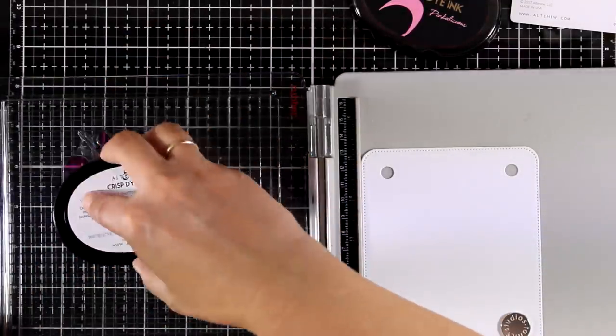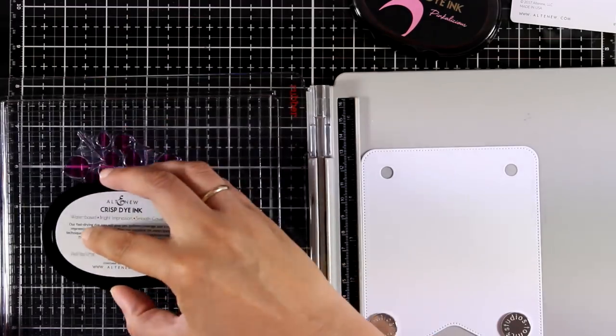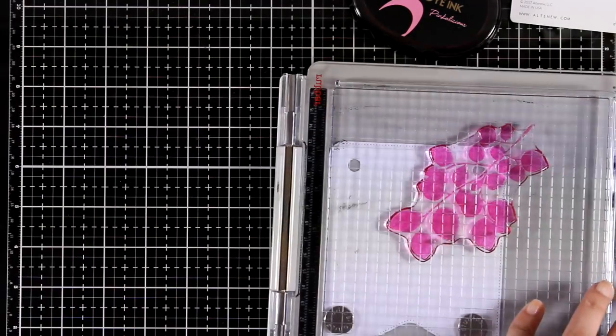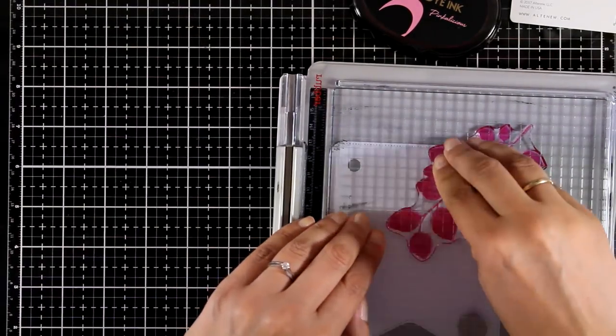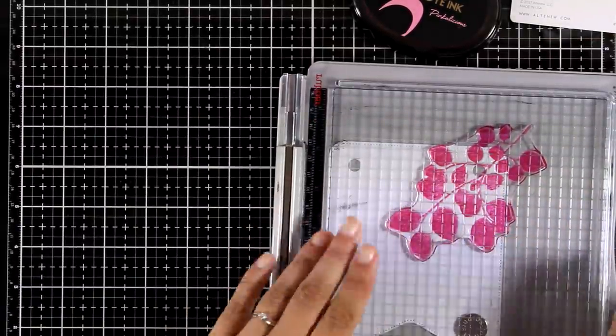I will be stamping the large and the small stamp of those leaf branches, and the idea is to cover up pretty much the top of this banner. Every time I'm stamping a bunch of leaves, I will be using a different shade of those pink inks.